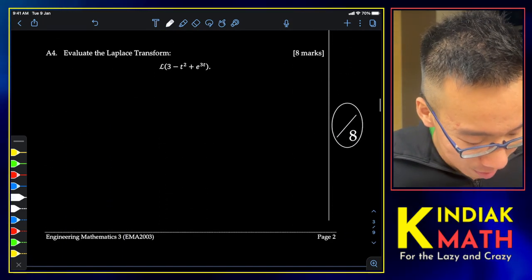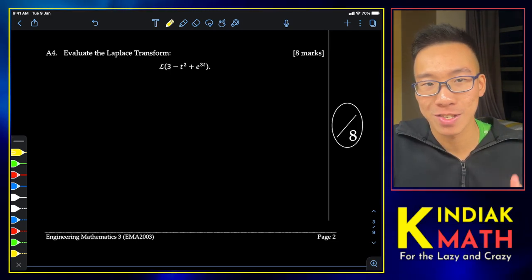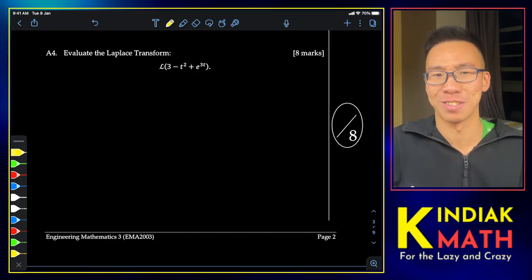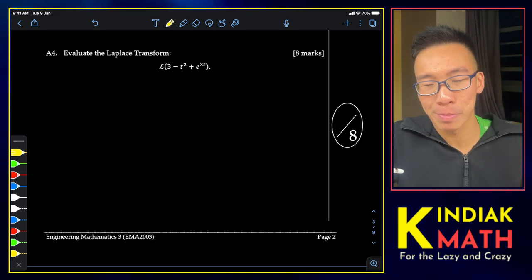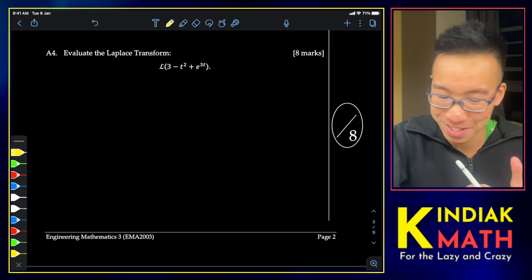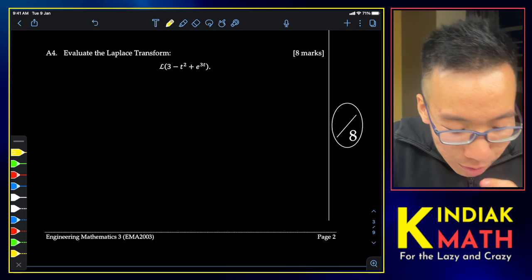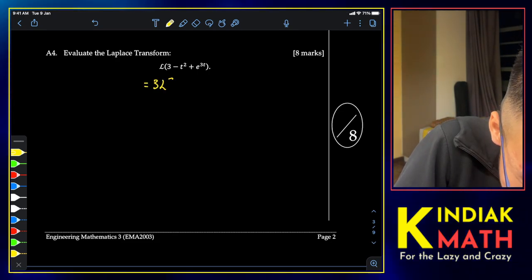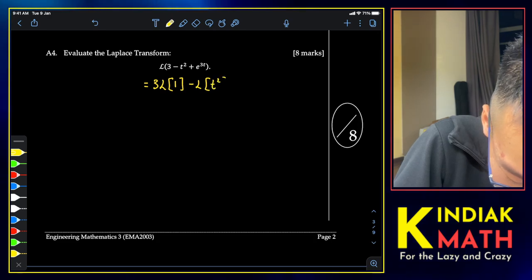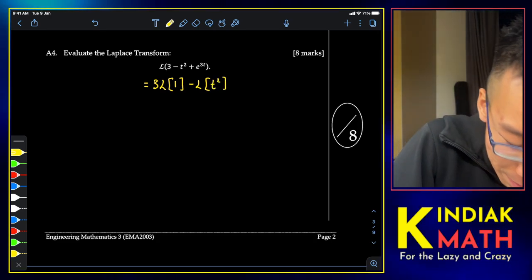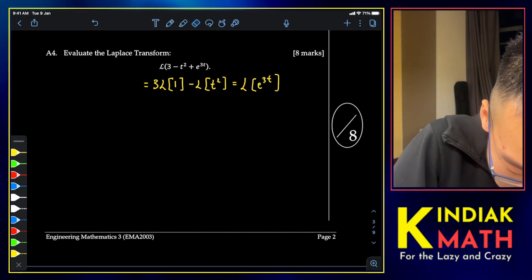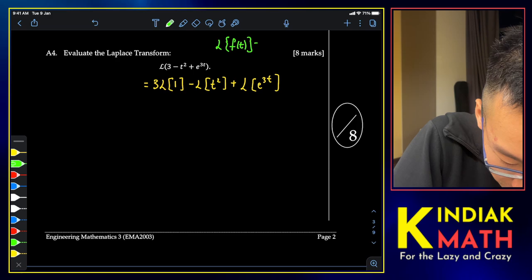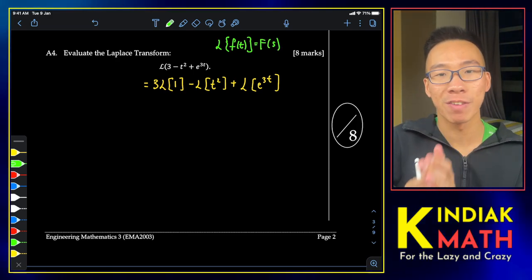Now we move on to Laplace transforms. Laplace transforms follow a standard table commonly used in engineering courses — check your institution for that. Laplace transforms are linear transformations, and I'll use square bracket notation here, though various notations exist.